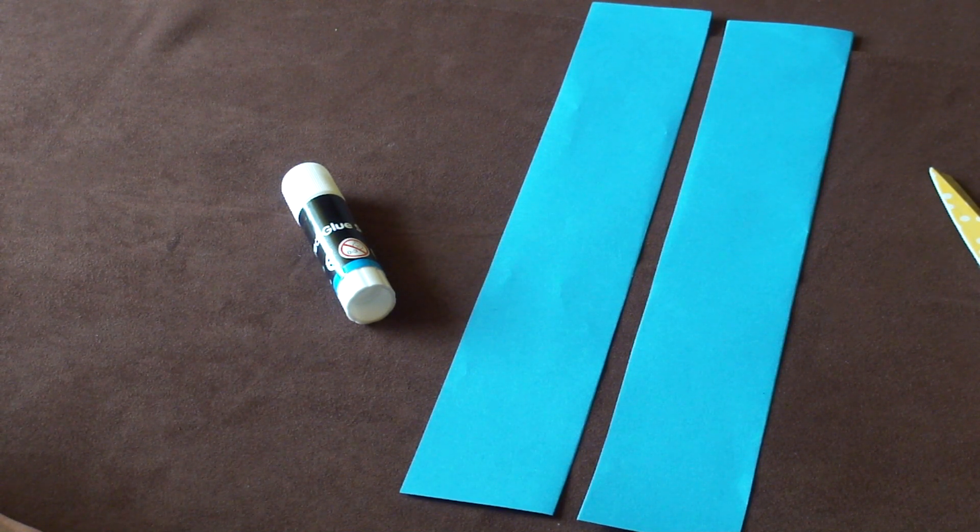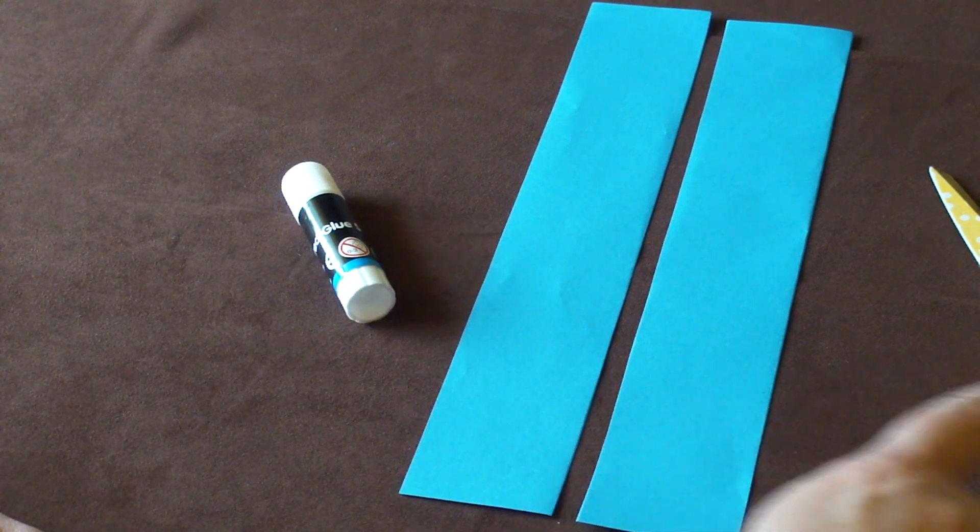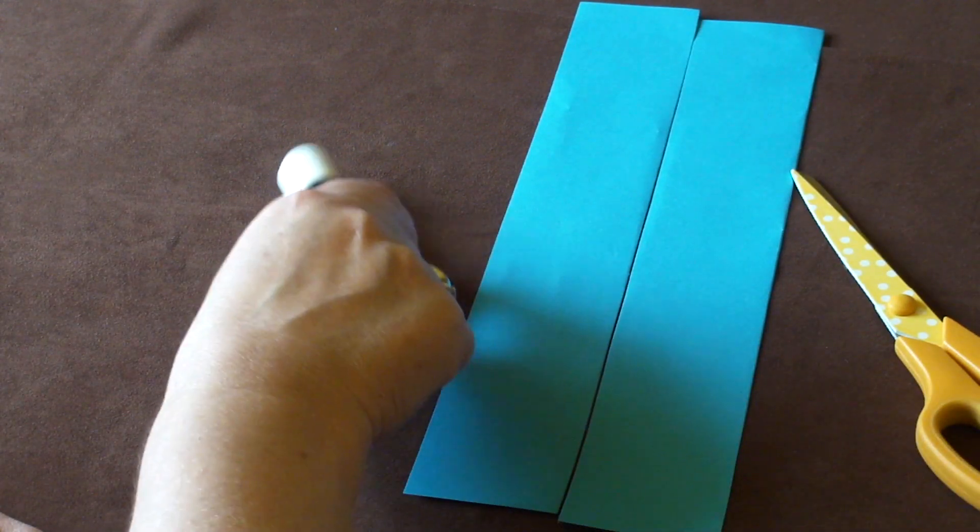Hello. This is how to make the Linked Hearts Mobius strip craft. You'll need two pieces of paper, a pair of scissors, and a glue stick.